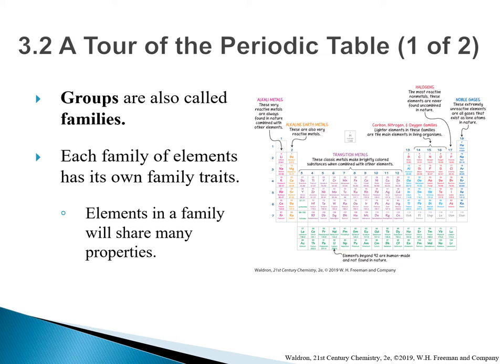Scrolling all the way to the far right, group 18 is the noble gases. These extremely unreactive elements are all gases that exist as lone atoms in nature. Next to the noble gas family, we have the halogens. Halogens are the most reactive non-metals. These elements are never found uncombined in nature.